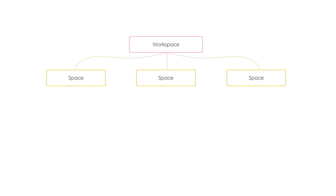In ClickUp you can work on anything with anyone, organized into different areas in a hierarchy. The highest level of the hierarchy is your workspace — think of your workspace as your company's building, everything else is organized within it. Within your workspace are spaces, these are high-level divisions to help you keep things organized.